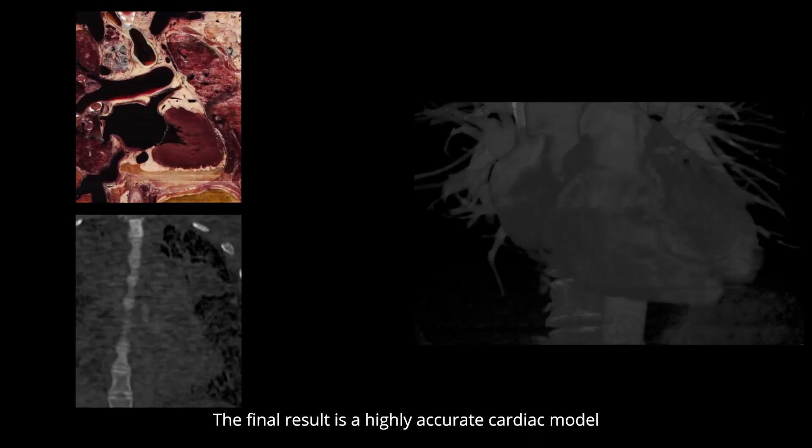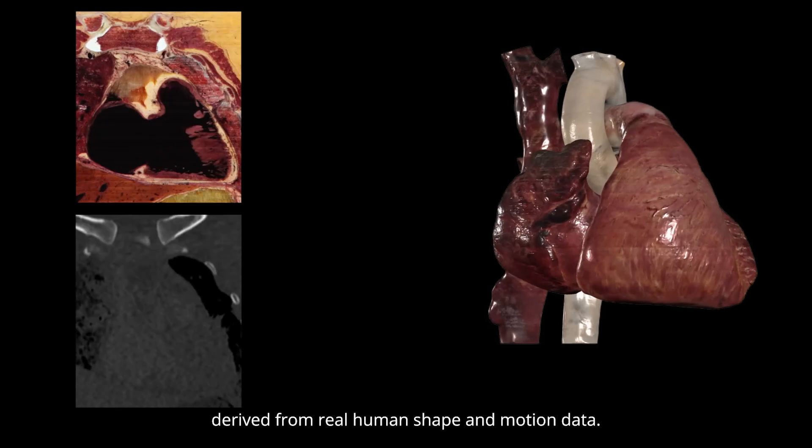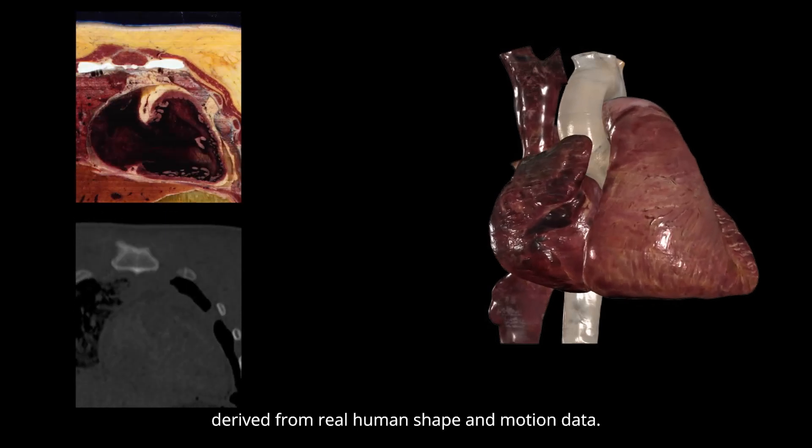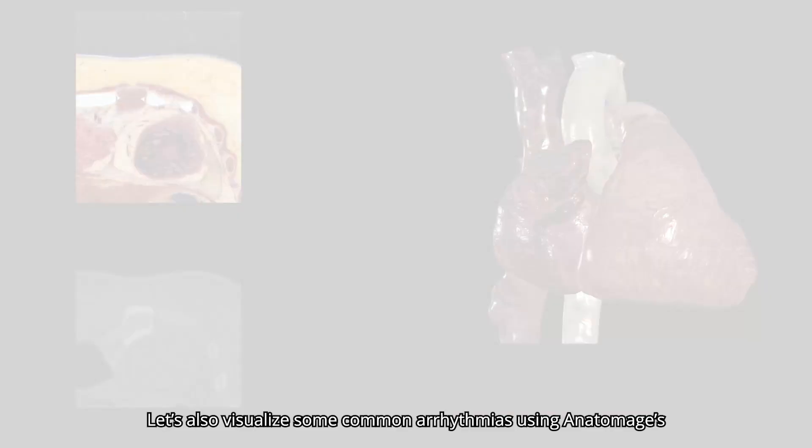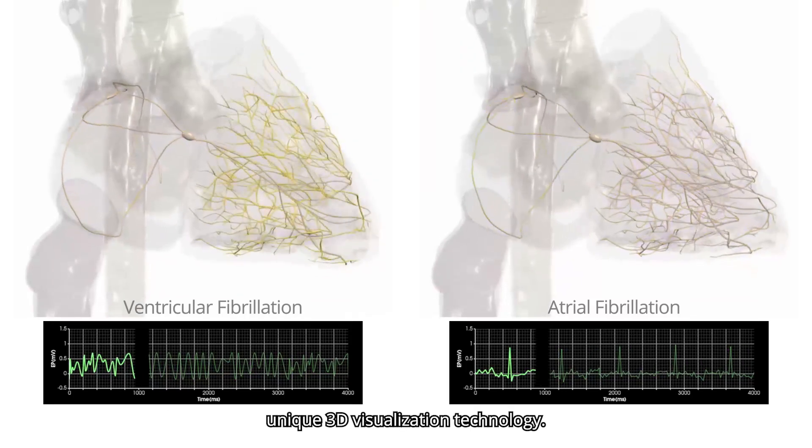The final result is a highly accurate cardiac model derived from real human shape and motion data. Let's also visualize some common arrhythmias using Anatomage's unique 3D visualization technology.